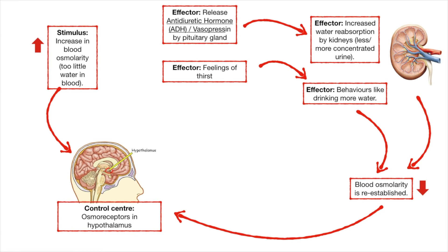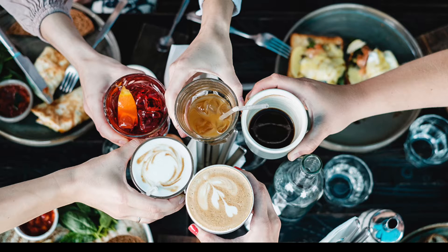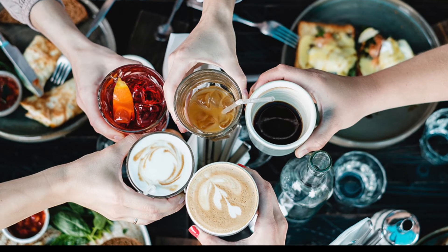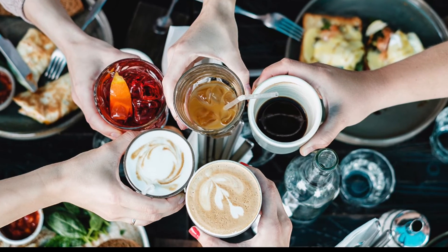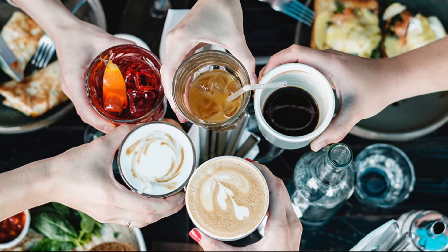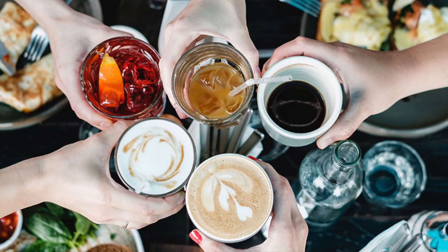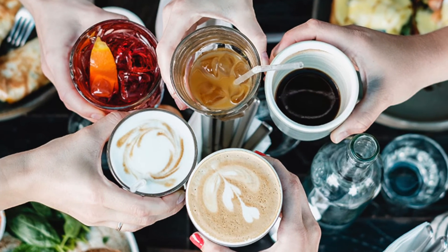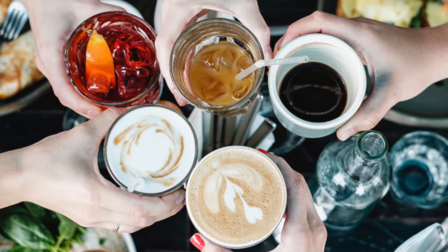Sometimes we consume things called diuretics, which essentially block antidiuretic hormone. Things like coffee or alcohol are diuretics — they block antidiuretic hormone and as a result cause us to pee a lot, which can lead to dehydration.